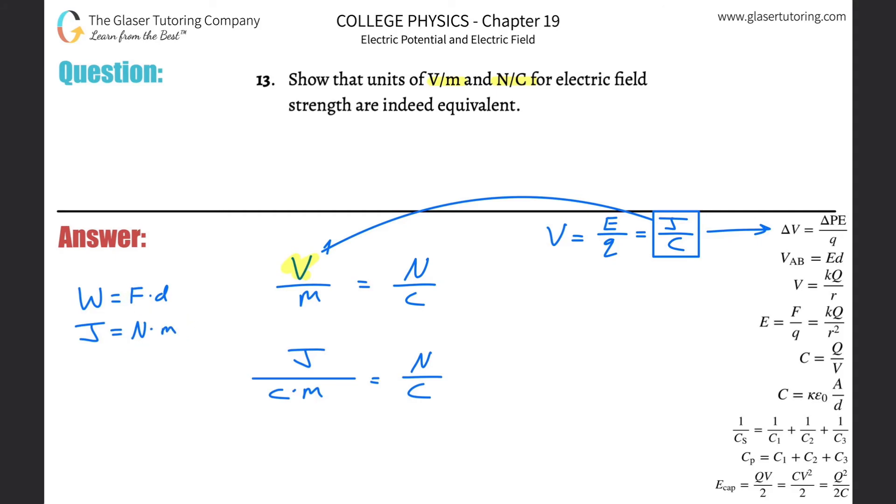So in other words, now what I'm going to do is I'm going to take the Newton meter and plug it in for joule. So when I do that, then I got Newtons times meter divided by Coulomb times meter. And that has to somehow equal Newtons per Coulomb. And wait a minute, if the meters cancel, what does it look like? Newtons per Coulomb. Thank goodness.